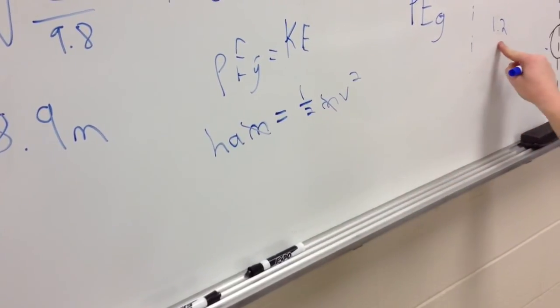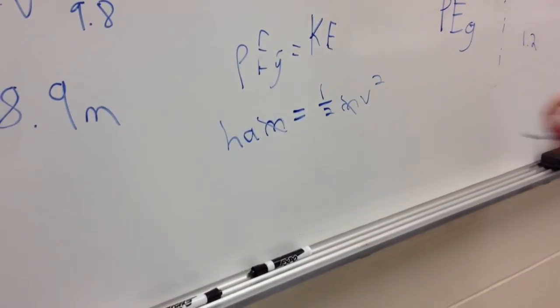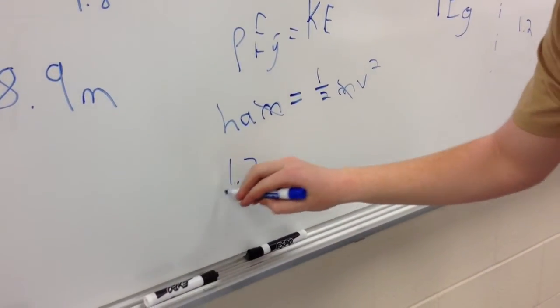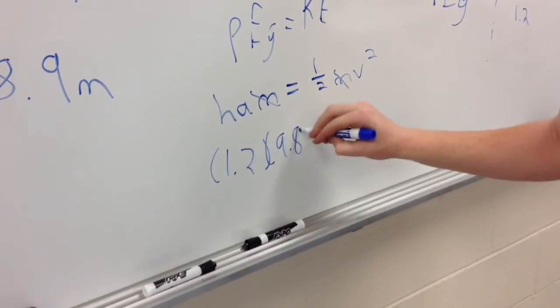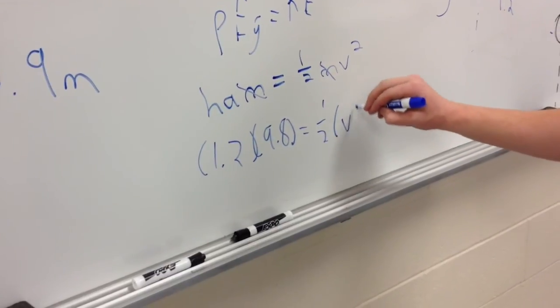We have a height difference of 1.2 which we just discovered. We have 9.8, we have one-half, and then we do not know the v squared.